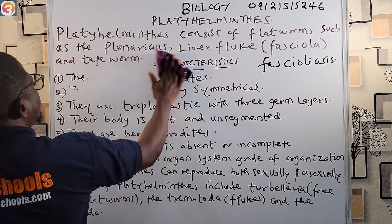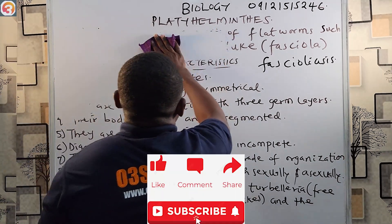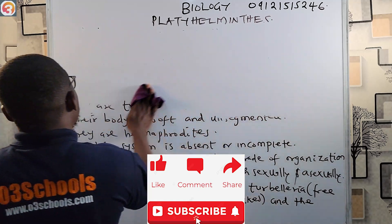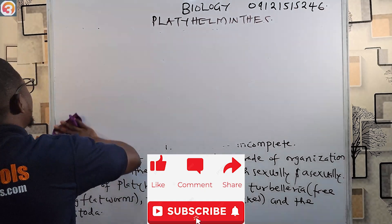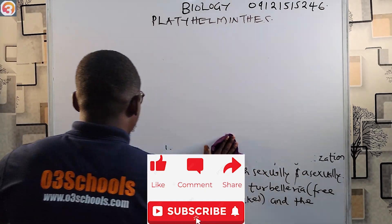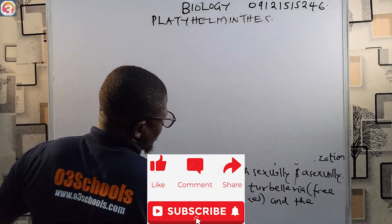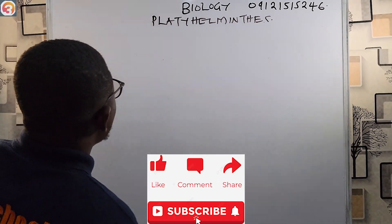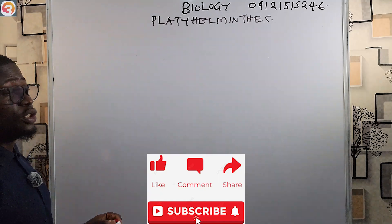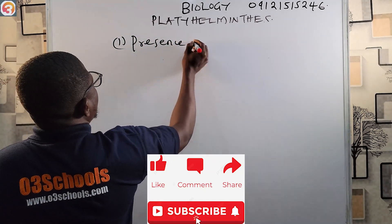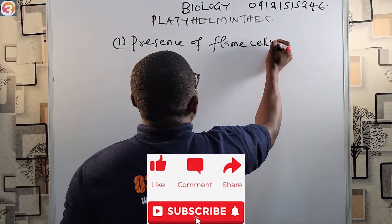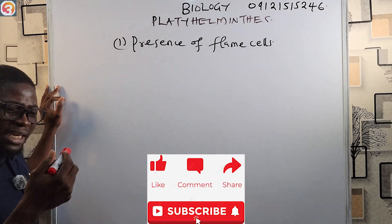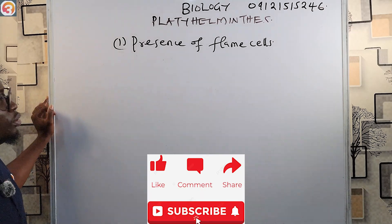Now let's look at some unique characteristics of Platyhelminthes. Please click that Like button as you watch — don't forget to subscribe for notifications on new videos, and share so other students can benefit too. One unique characteristic is the presence of flame cells — these are special excretory structures found in Platyhelminthes. Since they lack an anus and some digestive structures, flame cells serve as their excretory system.